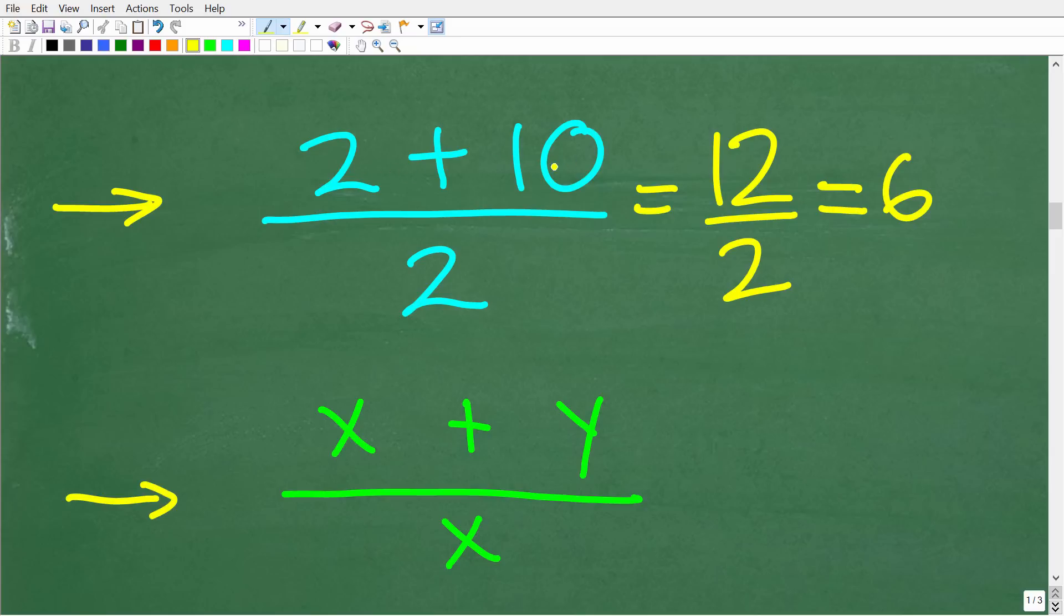All right now it gets even more trickier when you are dealing with algebra. Let's take a look at this example. So we have x plus y over x. So a lot of algebra students will see this x and this x right here and cross cancel. So they'll have their answer as y. Again this is wrong because x and y up here in the numerator are not factors right. So this is a sum.